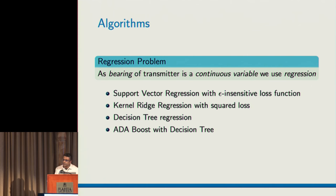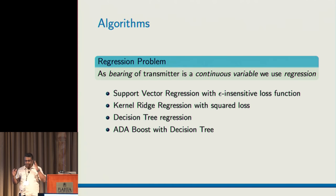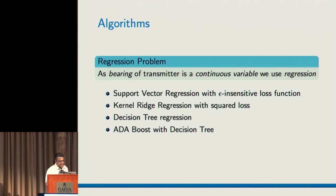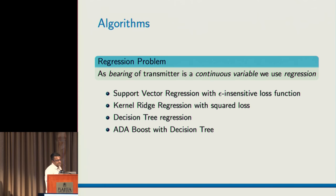We decided to use regression for this problem, because we are trying to predict the direction of the transmitter from the perspective of the receiver, which is a continuous variable. We used different algorithms: support vector regression, kernel ridge regression, decision tree regression, and AdaBoost with decision trees. These are pretty standard algorithms and we used Python implementations for each one.